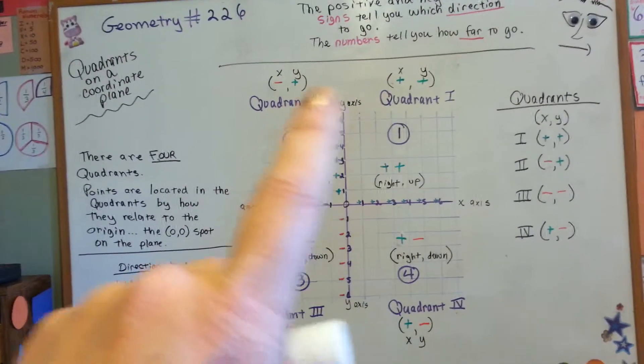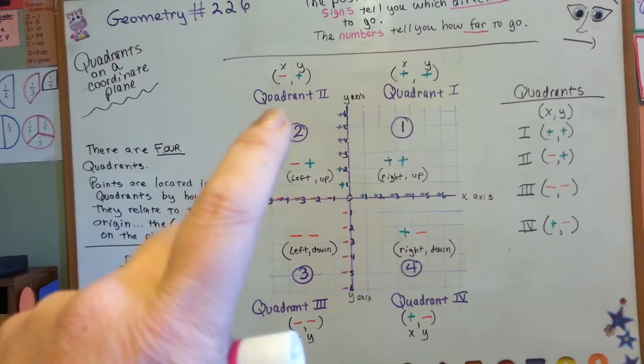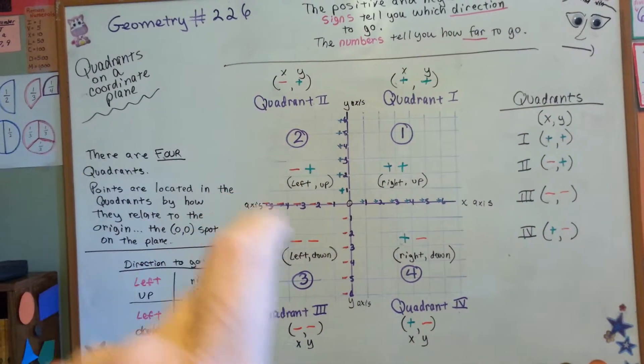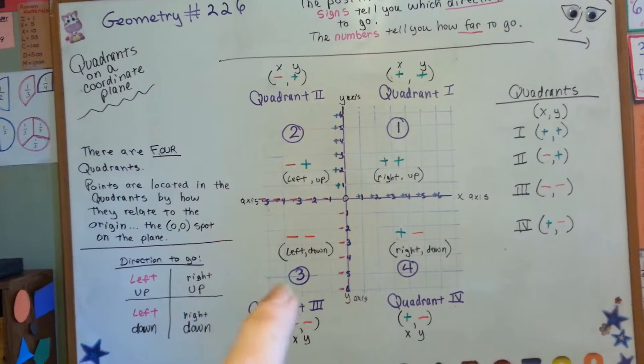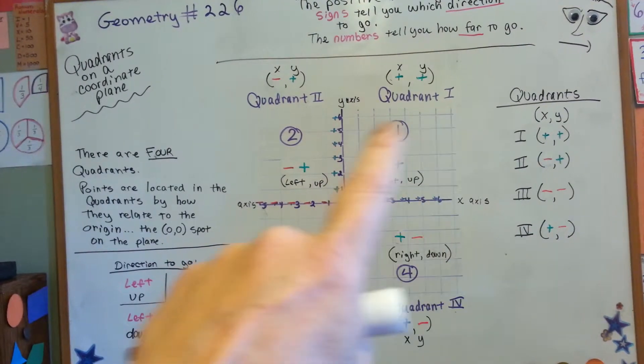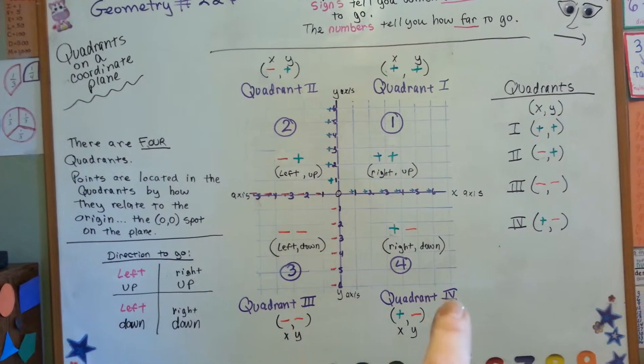Now, don't get confused because it makes a shape of a C. This is quadrant 2. This is quadrant 1, quadrant 2, quadrant 3, quadrant 4, and it's written as Roman numerals 1, 2, 3, and 4.